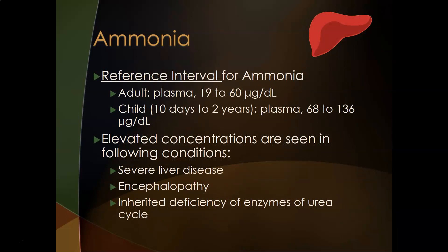The reference interval for ammonia in adult plasma is 9–60 micrograms per deciliter. For children from 10 days to two years, plasma levels range from 68–136 micrograms per deciliter. Elevated concentrations are seen in severe liver disease, encephalopathy (swelling of the brain), and inherited deficiencies of urea cycle enzymes.